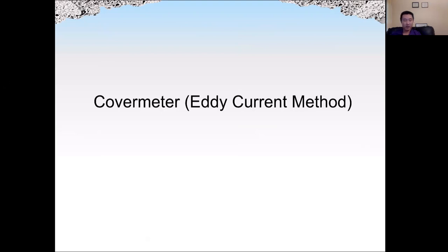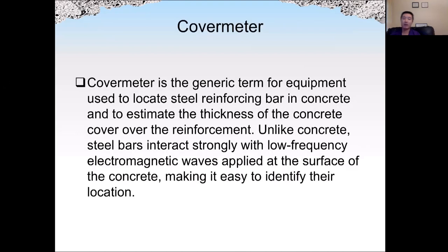The next series of methods are based on electromagnetic (EM) waves. The first one is called the cover meter, or eddy current method. The cover meter can be used to locate the position of steel rebar in reinforced concrete, find the depth of rebar, and even estimate the size of the rebar. We can also use this method to estimate the thickness of concrete cover over the reinforcement. Additionally, it can check the thickness of paint on steel. The cover meter uses low-frequency EM waves.